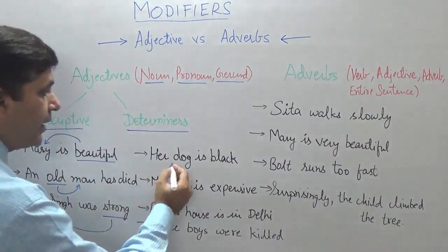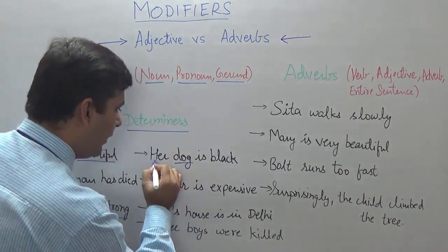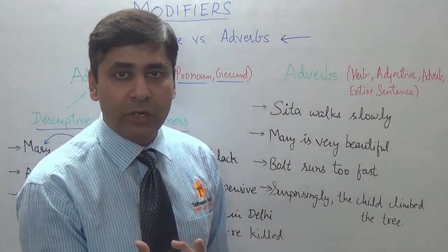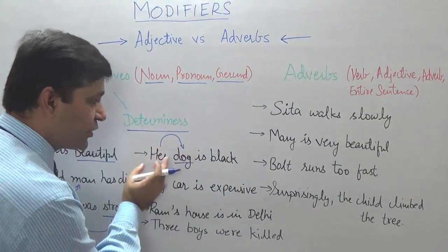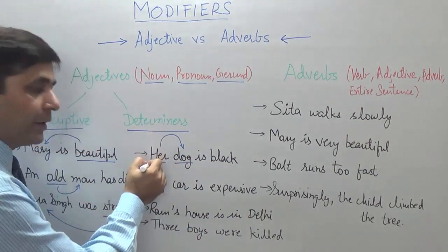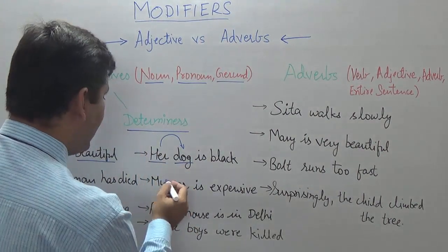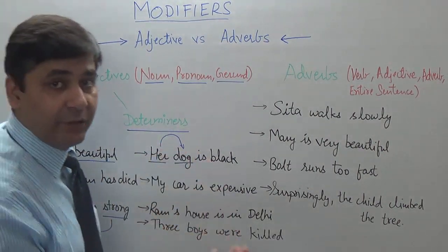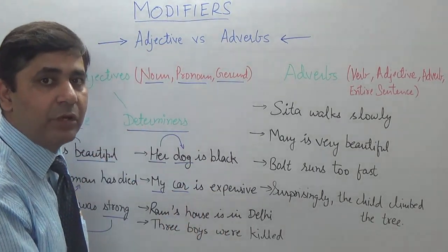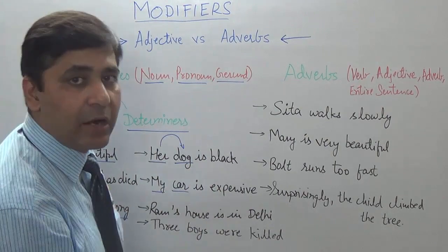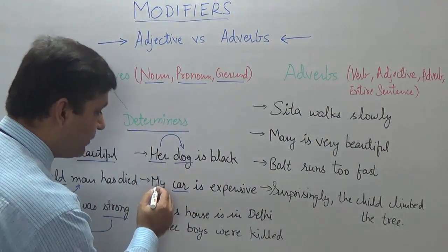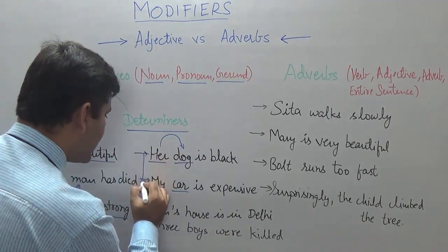For example, 'her dog is black.' Dog is the noun, and 'her' tells whose dog we are talking about — it shows possession. So 'her' becomes a possessive determiner. Similarly, 'my car is expensive' — 'my' tells whose car we are talking about, so 'my' is again a possessive determiner.